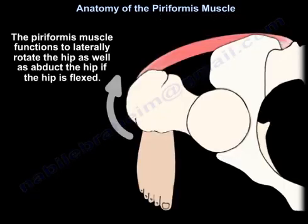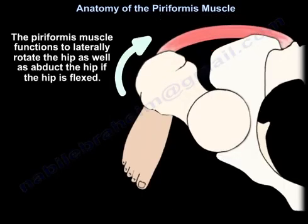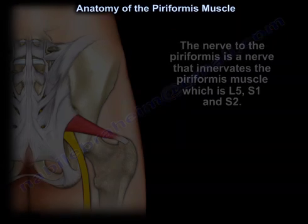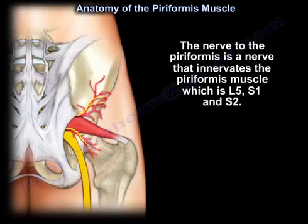The Piriformis Muscle functions to laterally rotate the hip, as well as abduct the hip if the hip is flexed. The nerve to the Piriformis, which innervates the Piriformis Muscle, is L5, S1, and S2.